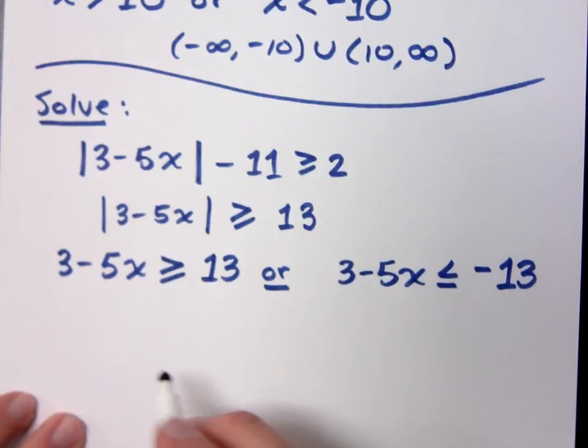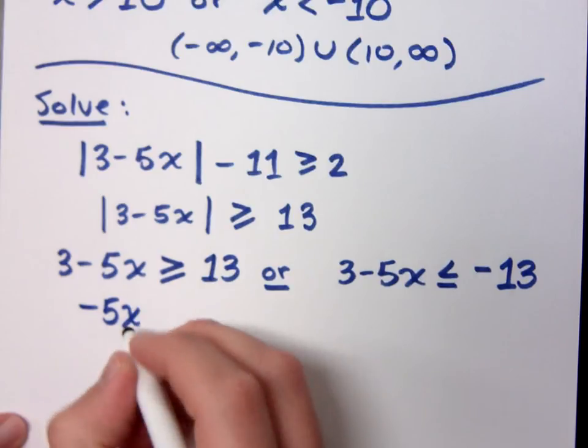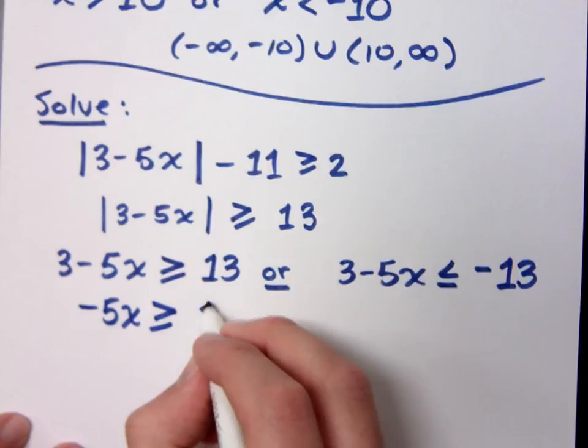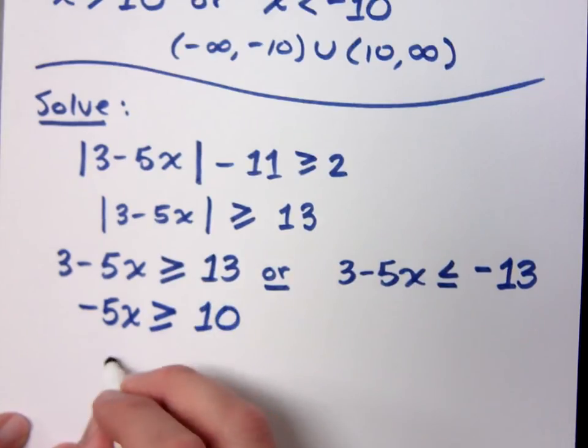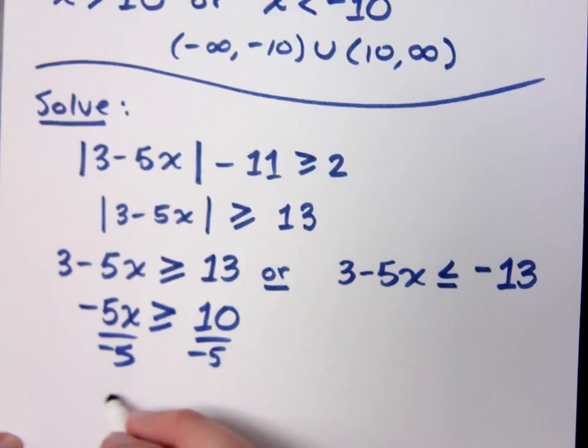How do I solve this guy? I'll help you out here. Negative 5x is what? Greater than or equal to 10, which means that... Negative 5, that's the sign. Divide by negative 5, so... x is... Less than or equal to negative 2. Everybody get that? No? Okay.